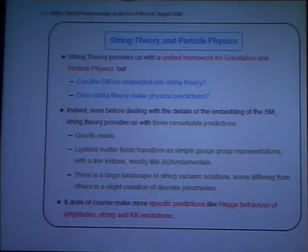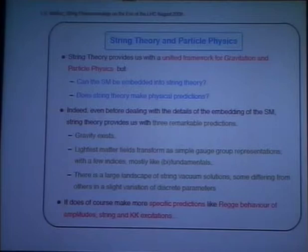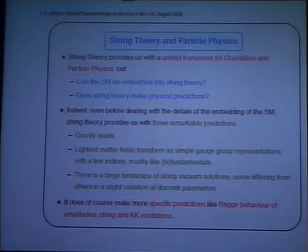Colleagues, even before dealing with the question of whether you can embed a standard model into string theory or not, string theory, one can say, makes three remarkable predictions: that gravity exists, that the lightest matter fields transform in simple gauge group representations — typically fundamentals or bi-fundamentals — and also that there is a large landscape of string vacuum solutions, some differing from others in slight variations of some discrete parameters.